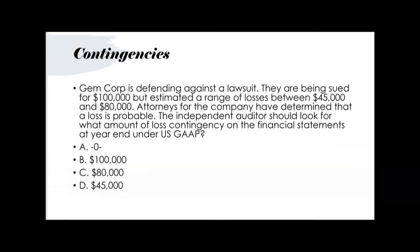A contingency question might be mixed into a simulation on journal entries where you determine the amount from the facts given. For example: Gemcorp is defending a lawsuit; they're being sued for $100,000 but estimate a range of losses between $45,000 and $80,000. Attorneys have determined that a loss is probable, and since it's estimable, we must book this contingent loss. What amount should be recorded at year-end under US GAAP?